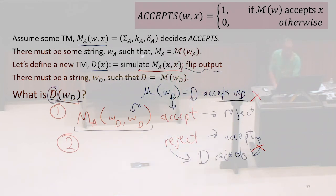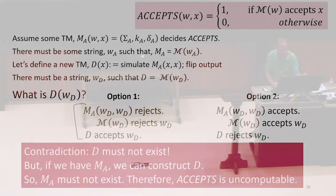If D accepts, that would mean this must accept, because this is really describing D. That would mean D must accept. But the way we define D then, it's got to reject. Same thing here. And if it rejects, it must accept. But it rejects. Both ways are contradictions.